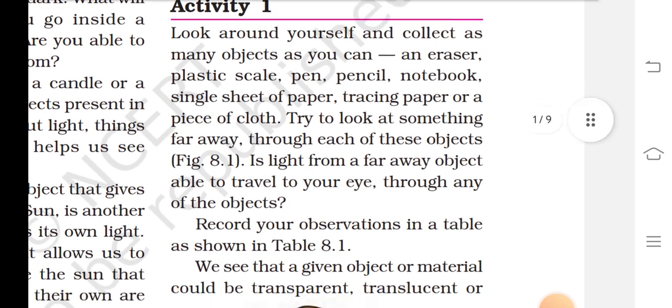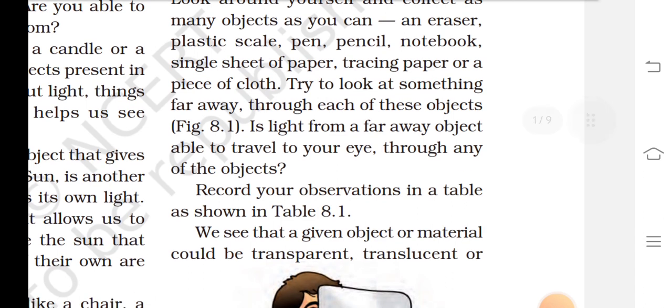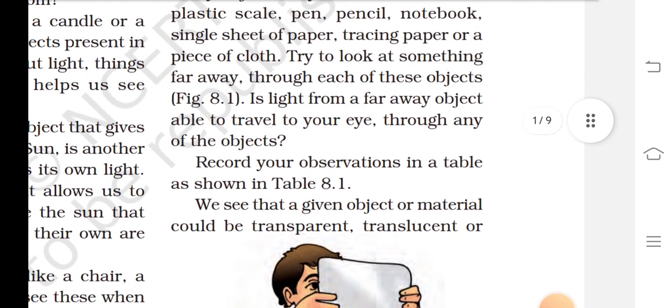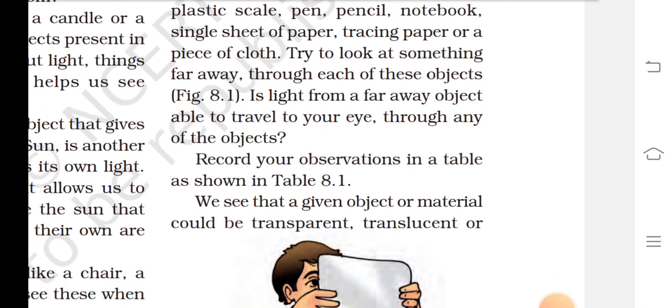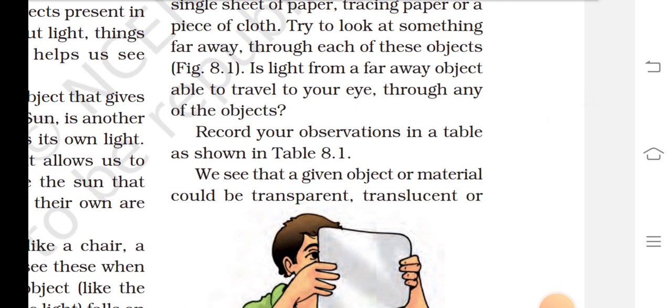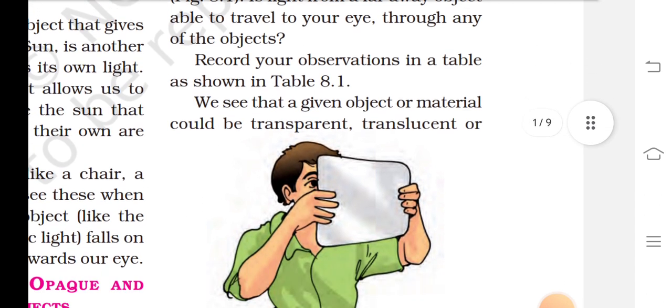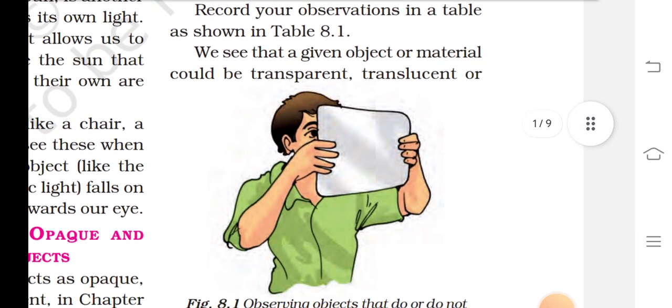Look around and collect as many objects as you can: a plastic scale, pen, pencil, notebook, single sheet of paper, tracing paper, or a piece of cloth. Try to look at something far away through each of these objects. Is light from a far away object able to travel to your eyes through any of the objects? Record your observations in a table as shown in Table 8.1.